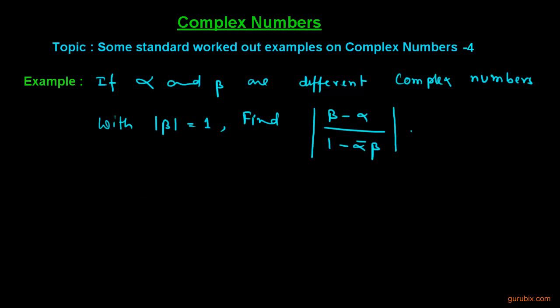Welcome friends. Let us solve another interesting question on complex numbers. The question is as follows: let alpha and beta be different complex numbers with mod beta equals 1. Then find mod of (beta minus alpha) over (1 minus alpha-bar into beta). So let us see how to solve it.